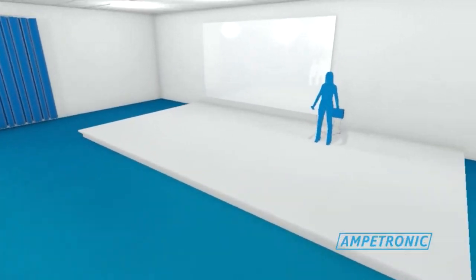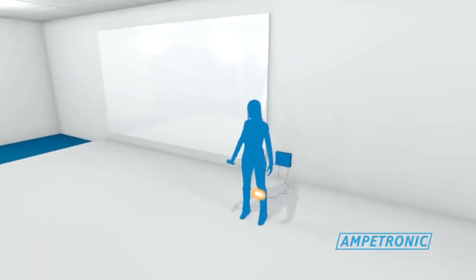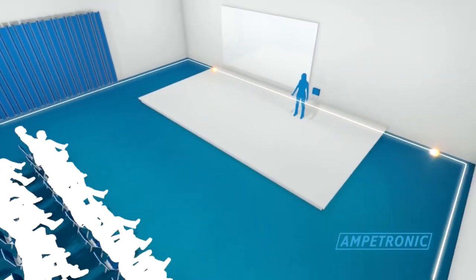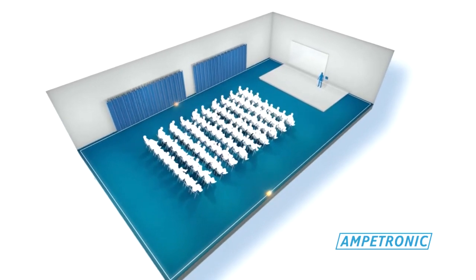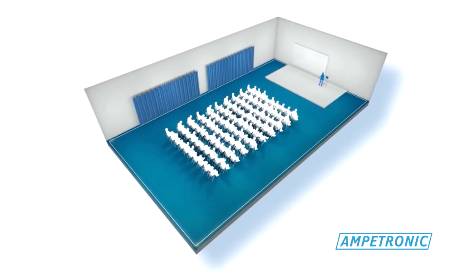The simplest form of area coverage hearing loop system is a perimeter loop, where the cable is laid around the perimeter of the room to cover the entire area. In this example, the speaker is using a dedicated handheld microphone to capture her voice.